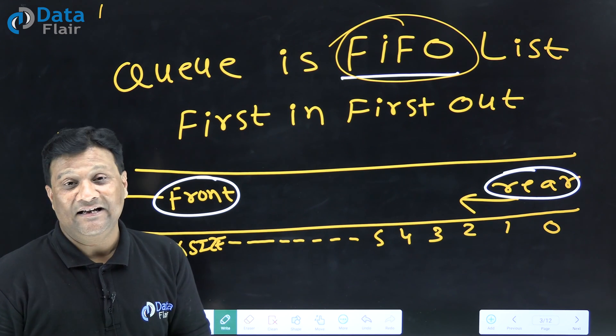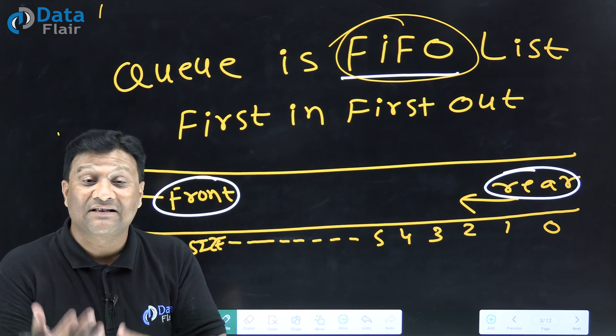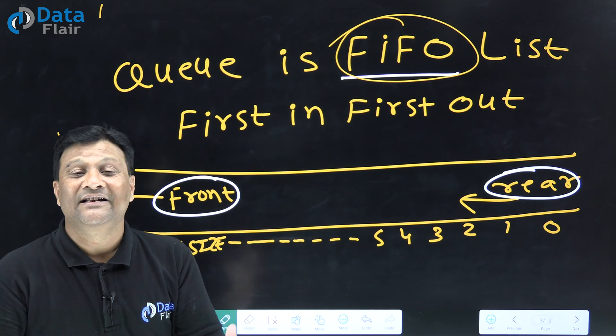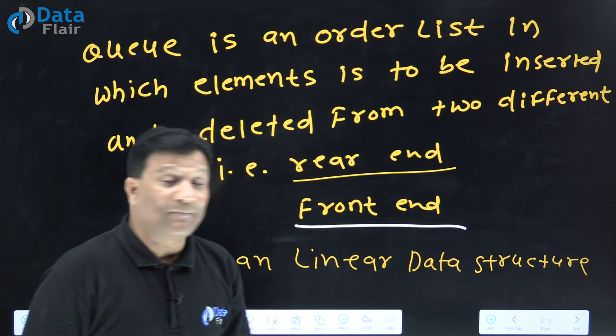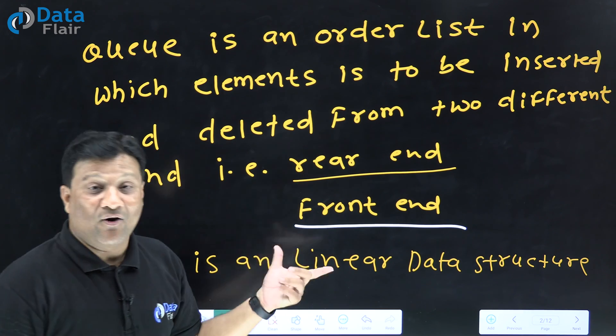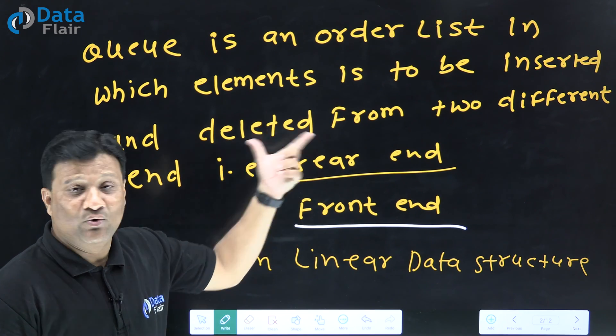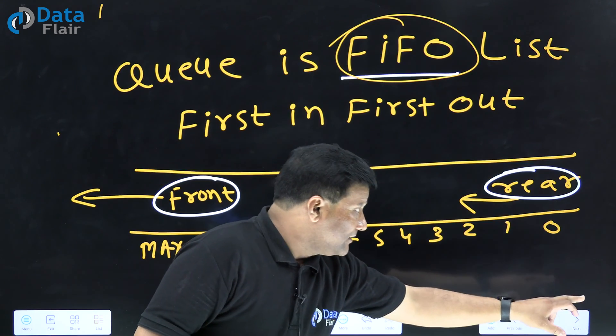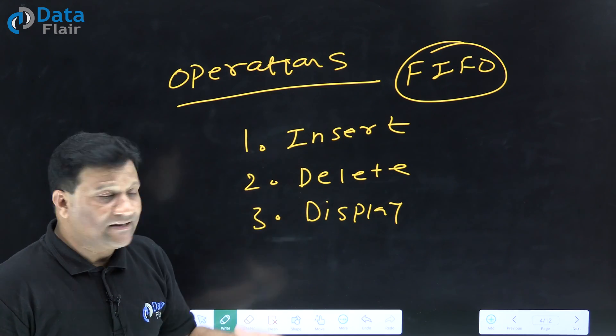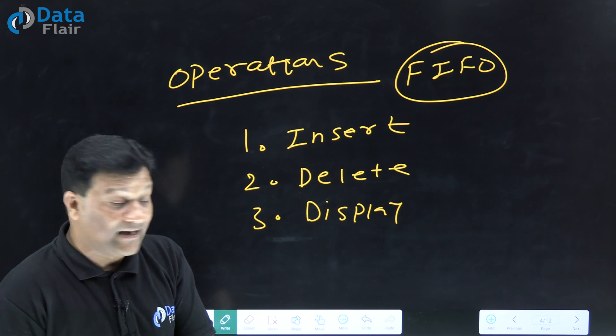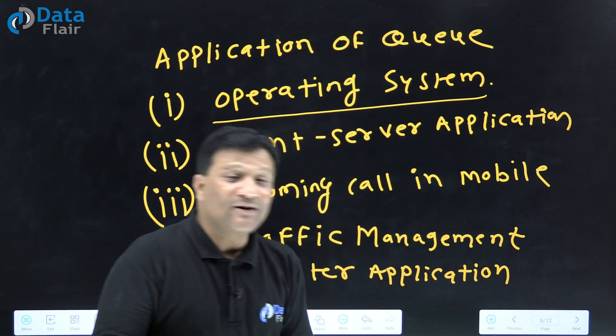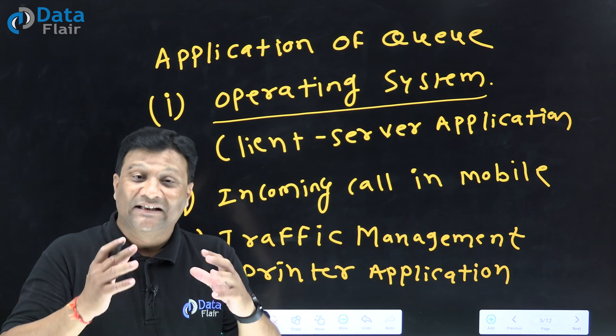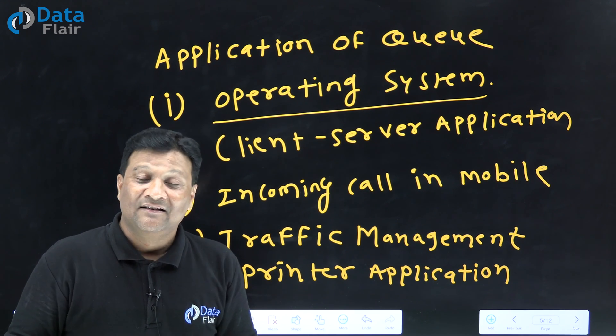The concept is very easy and simple to understand. But now, how will this implementation be done? How will we do programming with Queue? How will we implement this linear data structure? We read the definition that Queue is an ordered list. We talked about rear and front ends, Queue concepts, Queue applications, and the three operations we will perform in Queue. Now we need to discuss its implementation - how to implement Queue using C language.